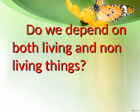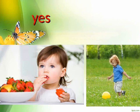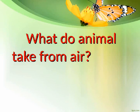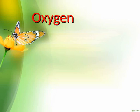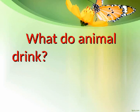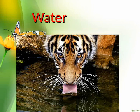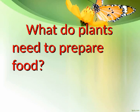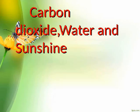Do we depend on both living and non-living things? Yes. What do animals take from air? Oxygen. What do animals drink? Water. What do plants need to prepare food? Carbon dioxide, water, and sunshine.